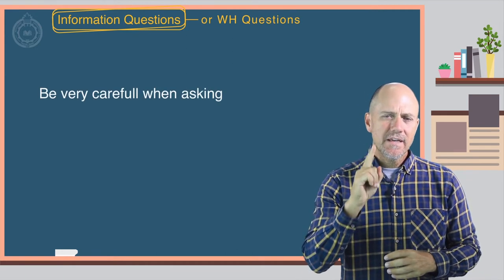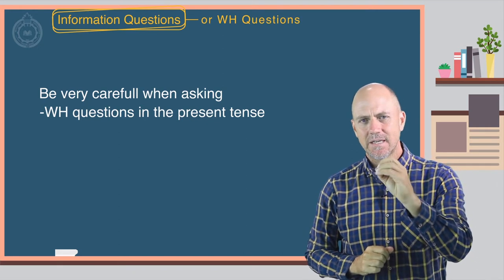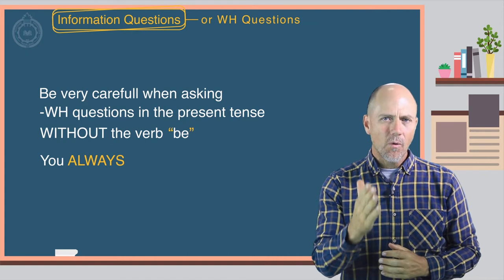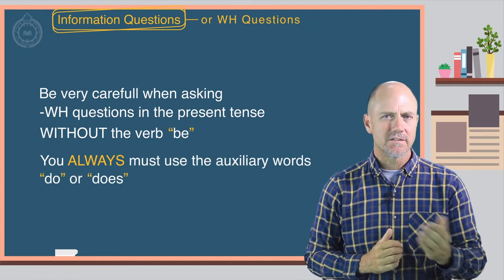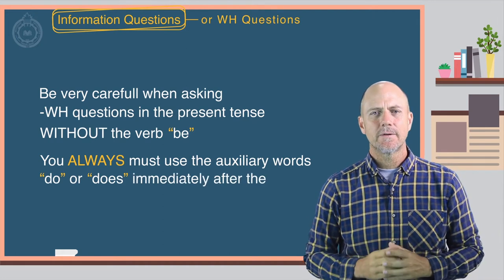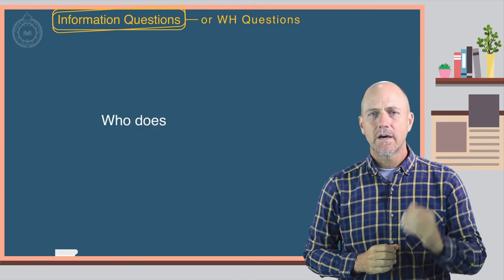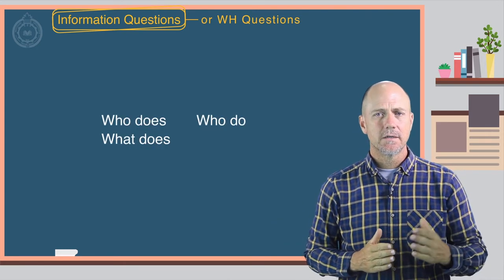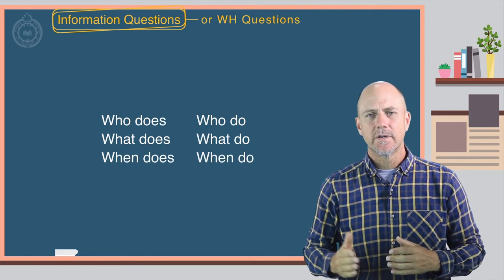Be very careful when asking WH questions in the present tense without the verb be. You always must use the auxiliary words do or does immediately after the WH question word. Who does? Who do? What does? What do? When does? When do? Etc.